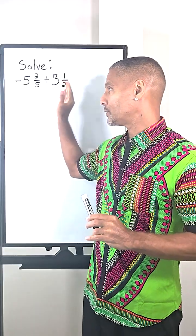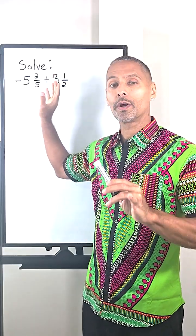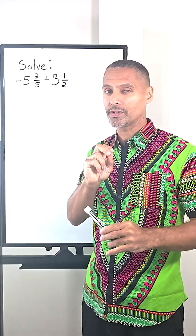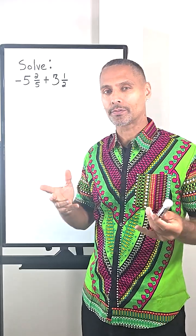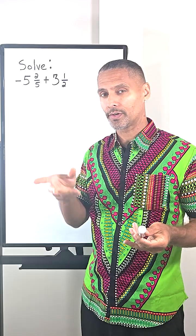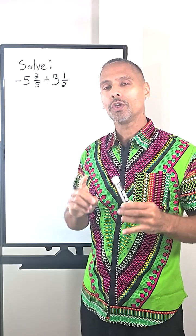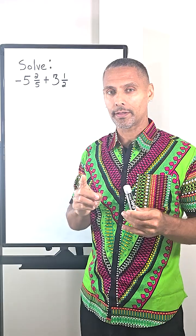Remember, whenever you are combining two terms and one of them is negative and one of them is positive, the sign that you use is determined by which of the two terms has a larger absolute value or is further away from zero. And when the two signs are different, a positive and a negative, you have to subtract the absolute values.